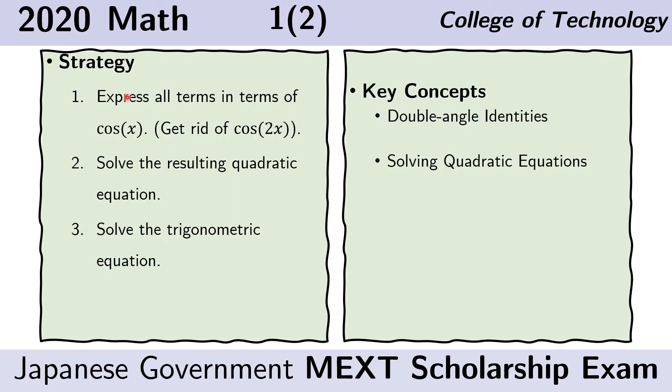First thing we want to do is to get rid of the cosine 2x. So we want to express this in terms of cosine x. And to do that, we will need the double angle identities from trigonometry. Then when we have everything expressed in cosine of x, we will have a quadratic equation. And we will have to solve that quadratic equation.